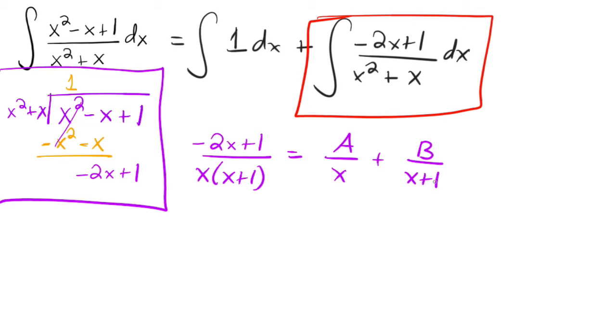Now just like in previous problems, multiply both sides by the denominator to get rid of it. And so then what we get is negative 2x plus 1 equals to a times x plus 1 plus bx.